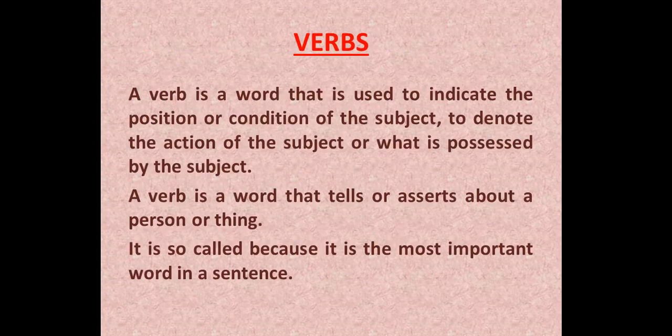So, students, we can say that a verb is a word that is used to indicate the position or condition of the subject, to denote the action of the subject, or what is possessed by the subject. In easy words, verbs are action words or doing words. A verb is a word that tells or asserts something about a person or thing. Verb comes from the Latin 'verbum,' and it is so called because it is the most important word in a sentence.